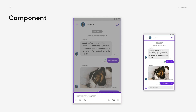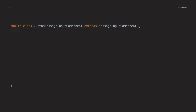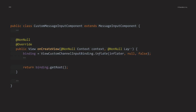Next, let's customize the component. In the case of components, it is used to apply a custom view by replacing the existing view. Let's use the MessageInput component as an example. Inherit the MessageInput component and overwrite the onCreateView method to create and apply a custom view. Create and return a custom view using context, inflator, and parent information passed as parameters. Basically, the view created here is added to the parent in the module, so you don't need to attach the view to the parent here.